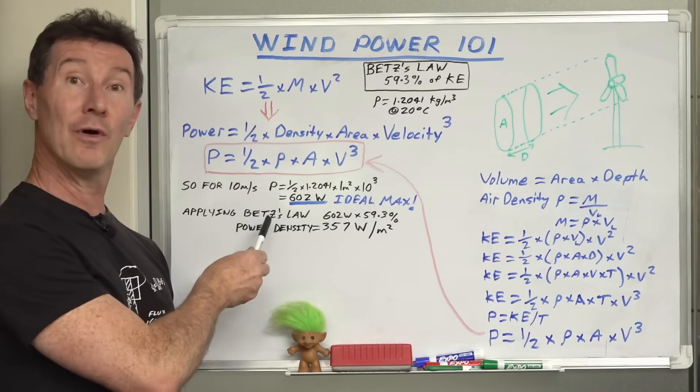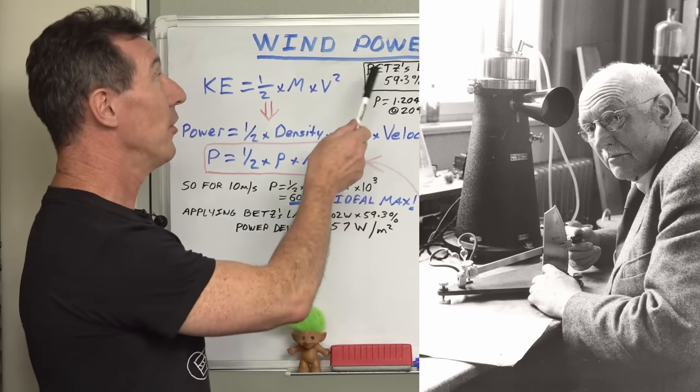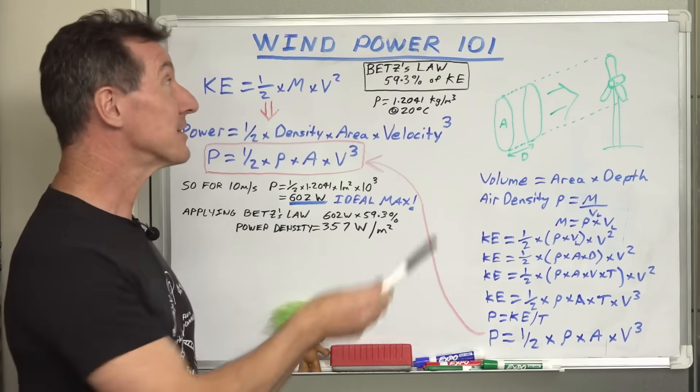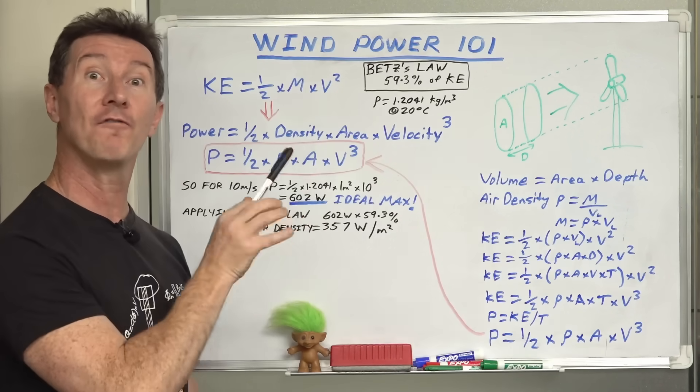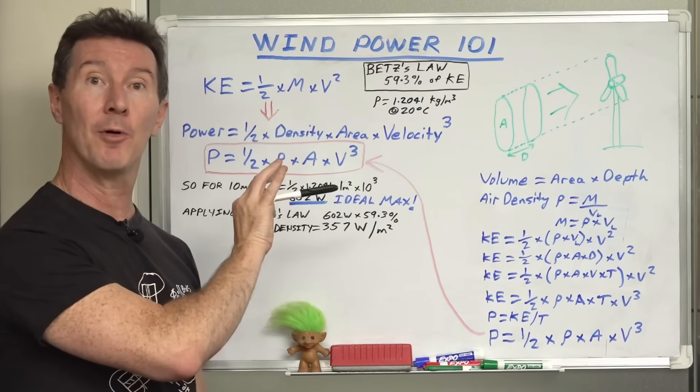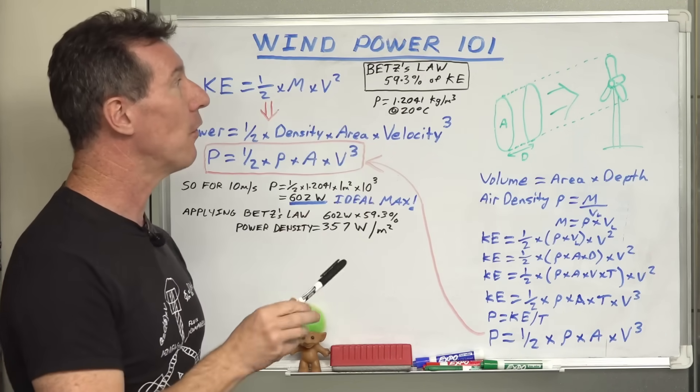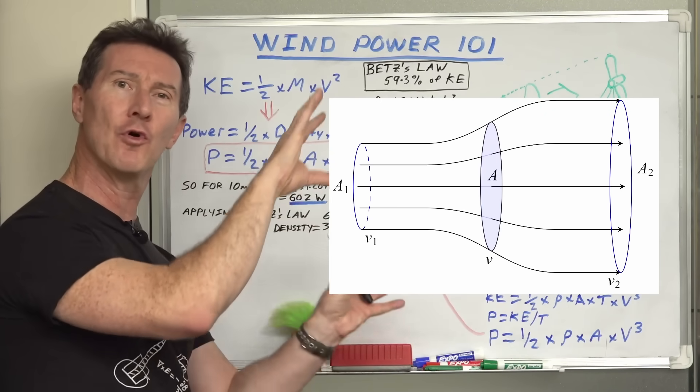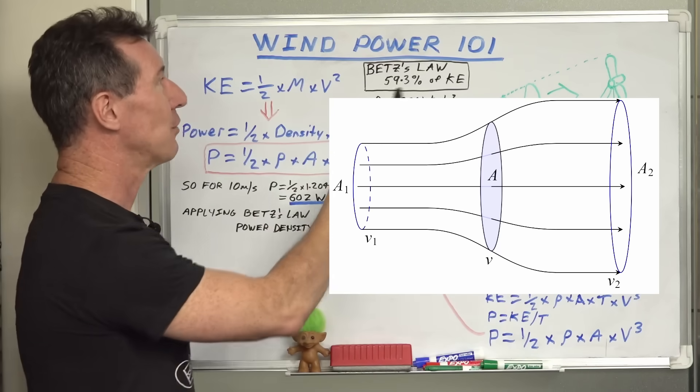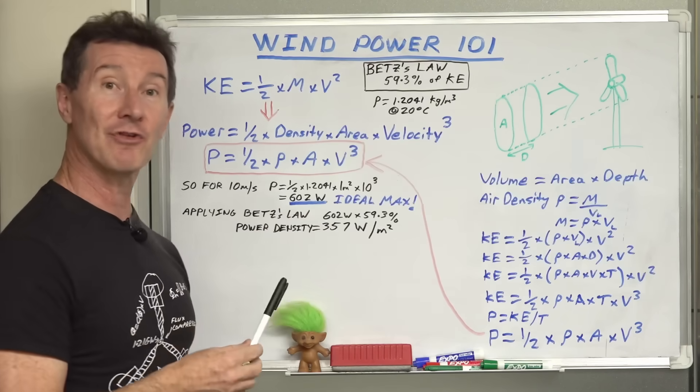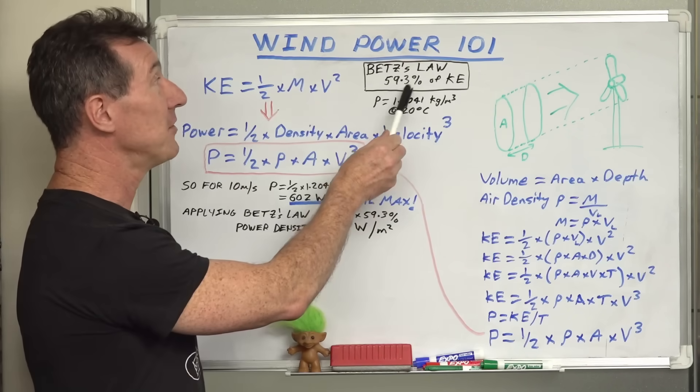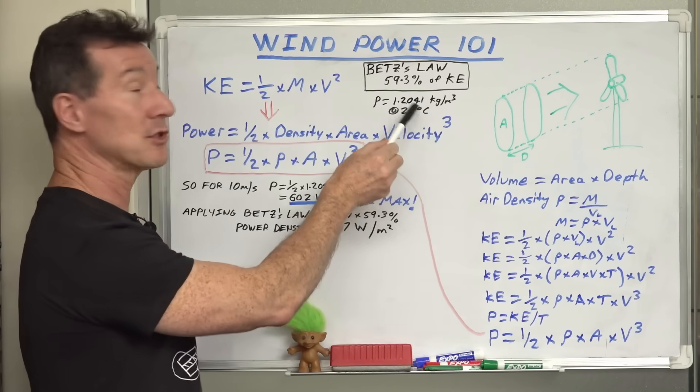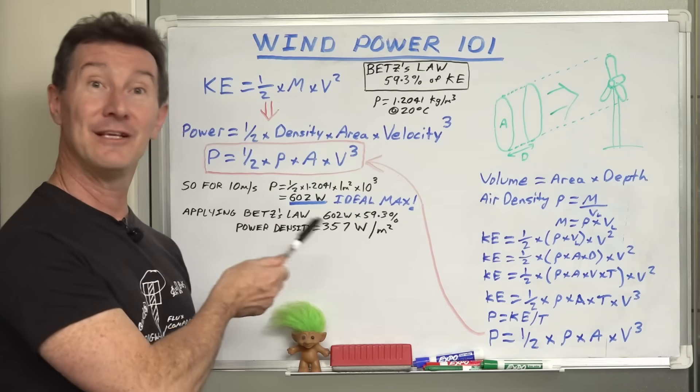Now there's this thing called Betz's Law. There was this smart dude called Albert Betz early last century who came up with Betz's Law. It states that you can't extract more than 59.3% of the kinetic energy going into a wind turbine or a fluid turbine. That is because when it actually flows into it like this, it actually spreads out, it can't capture it all. He's analyzed all this and figured out that that is the absolute maximum figure that you can extract from it. So anyone claiming to extract more than 59.3% of this 602 watts per square meter at 20 degrees at that air density is violating Betz's Law.